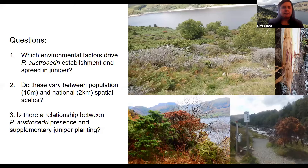The questions I'm going to try to illuminate today are: which environmental factors are driving the establishment of austrasidri infection of juniper; do these factors differ when you're looking at the population scale versus the national scale; and is there a relationship between the presence of the pathogen and where juniper has been planted?